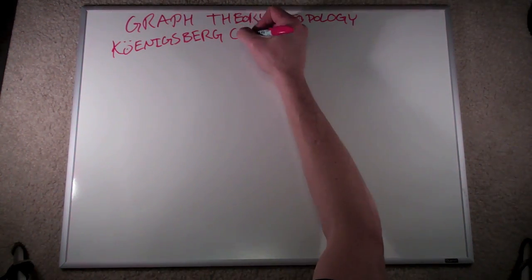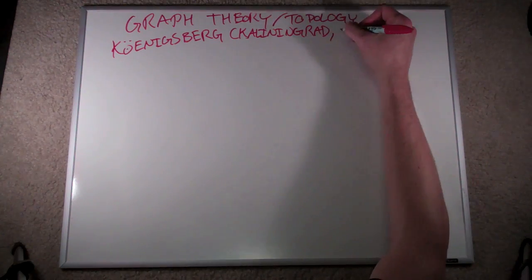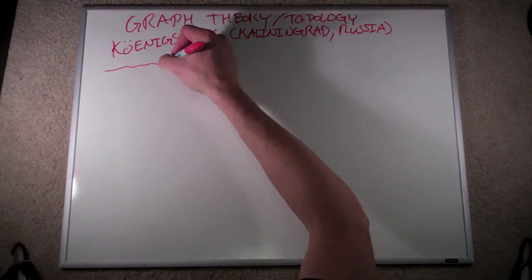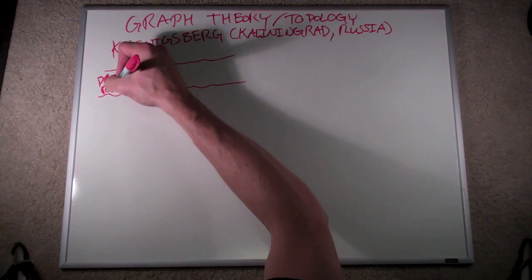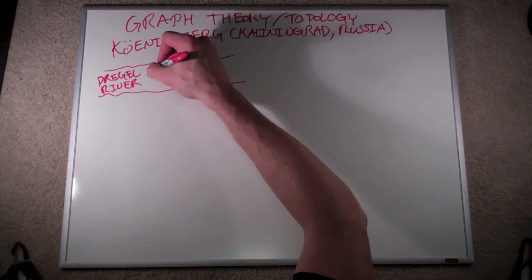We're going to start it off by going back in time to a town called Koenigsberg, which is located in modern Kaliningrad, Russia. Koenigsberg sits right at the mouth of the Pregel River, and there happen to be two islands that sit in the middle of this river.